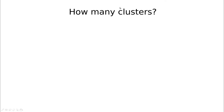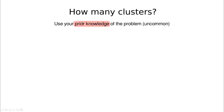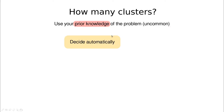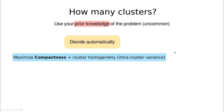Here is the million-dollar question: how many clusters? Sometimes you have prior knowledge of the problem — that's uncommon, but for instance in medicine you might want to distinguish between diseased and healthy patients, giving you two clusters. But in most cases you don't know that, so you have to decide automatically, and we have different criteria for that.